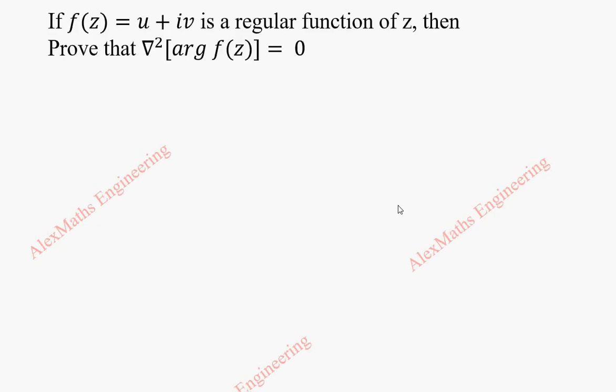Hi students, this is Alex here. In this problem, they have given f which is u plus iv, a regular function of z. And we have to prove this expression equal to 0.